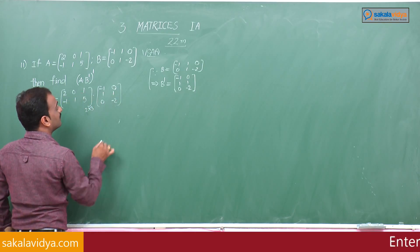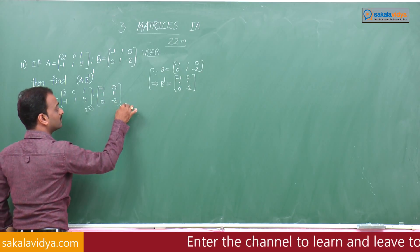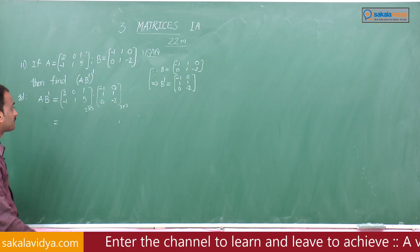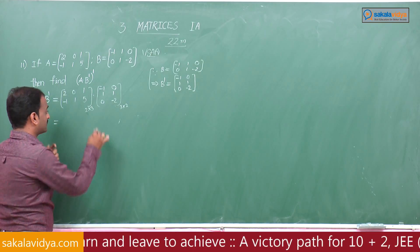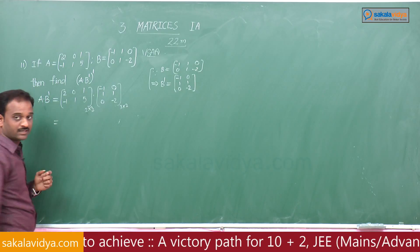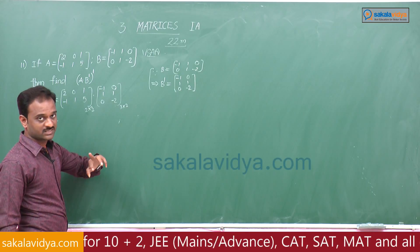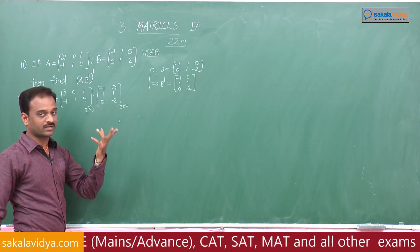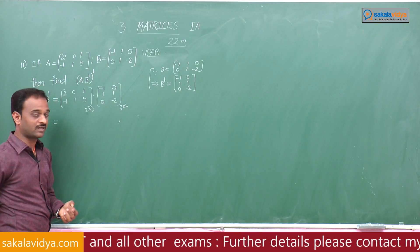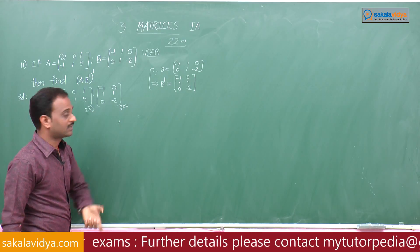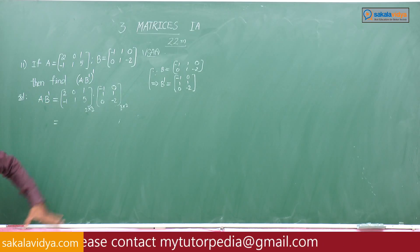B transpose has order 3×2, with 3 rows and 2 columns. The number of columns of A is 3, which equals the number of rows of B transpose, which is also 3. So the product A into B transpose exists.